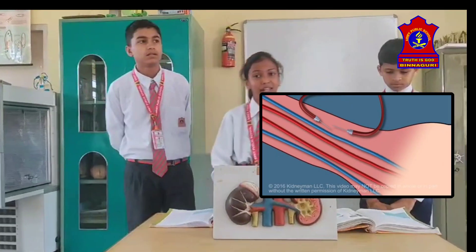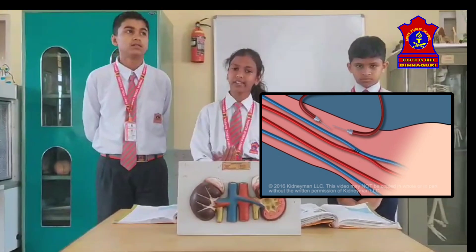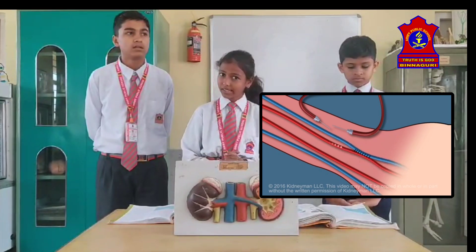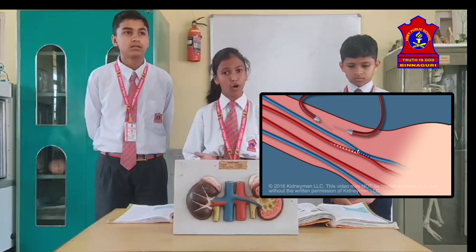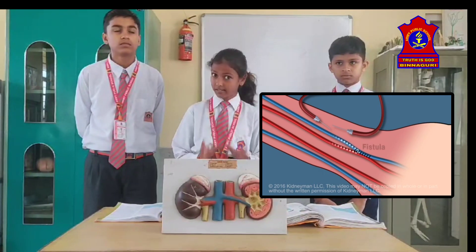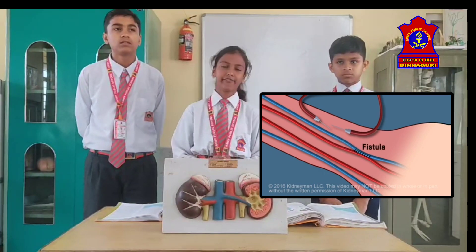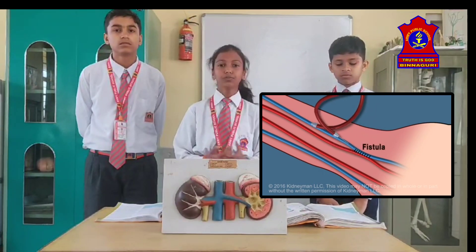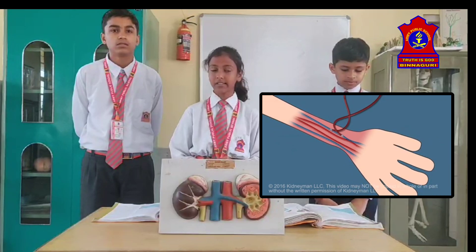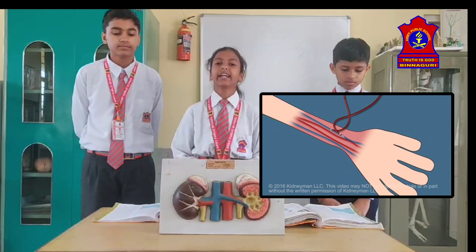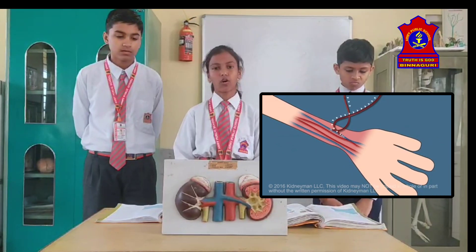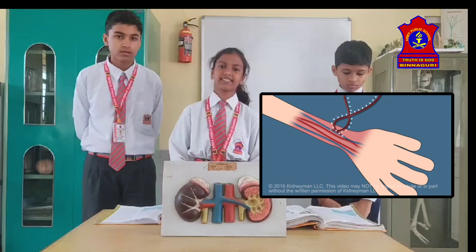Now let me explain dialysis. Sometimes a person's kidneys may stop working due to infection or injury, resulting in kidney failure. Such persons cannot survive unless their blood is filtered through an artificial kidney — this process is called dialysis.